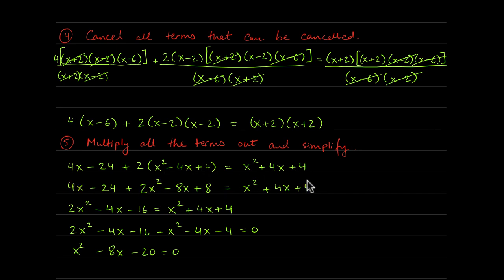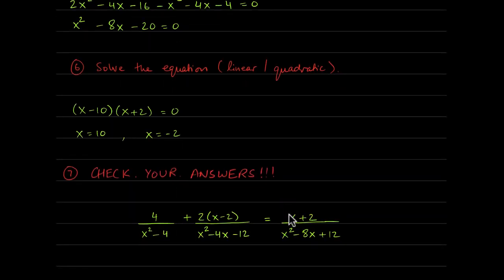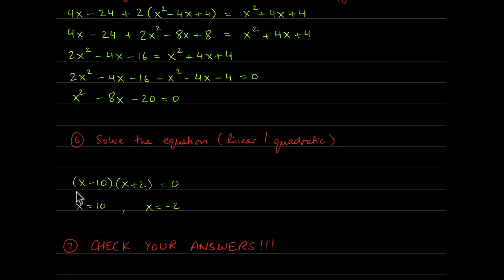Distributing the 2 and combining all like terms, then moving everything to one side, we're left with the quadratic x squared minus 8x minus 20 equals 0. Factoring using the AC method gives x minus 10 times x plus 2 equals 0. Using the zero product property yields x equals 10 and x equals negative 2.